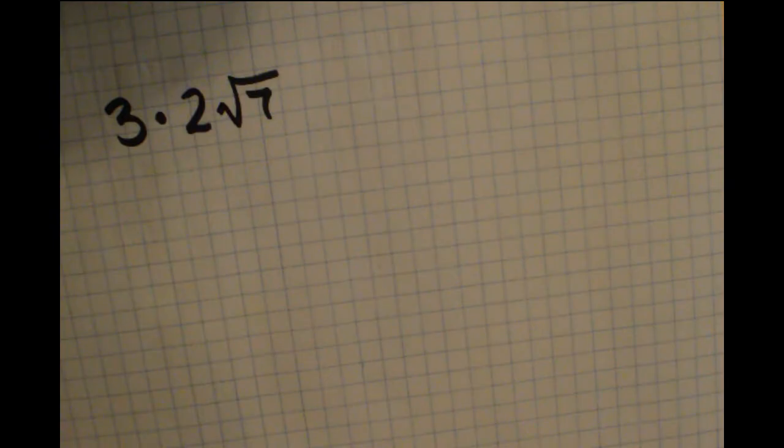In this video, we're going to take a quick look at multiplying radicals together. Here's a quick example of multiplying two terms together: 3 times 2 radical 7.